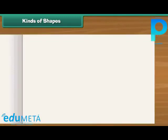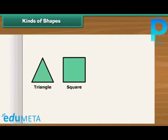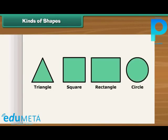The shapes that we draw on paper, such as triangles, squares, rectangles, circles, etc., are called plain shapes.